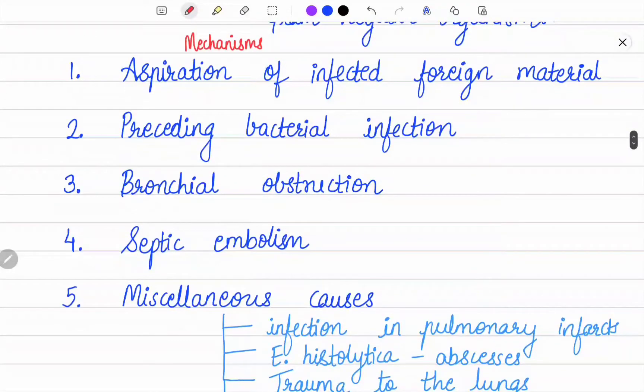First is aspiration of infected foreign material. Materials like those from decaying teeth, gastric contents, severely infected gingiva and teeth, and necrotic tissues from lesions in the mouth, upper respiratory tract, or nasopharynx may be aspirated. This occurs particularly in favorable circumstances such as during sleep, altered consciousness or unconsciousness, anesthesia, general debility, and acute alcoholism.